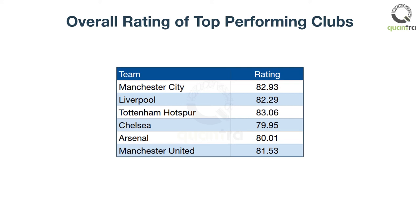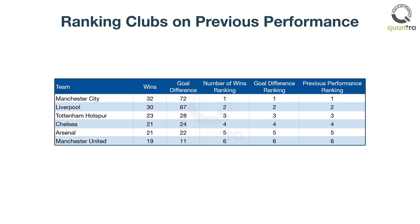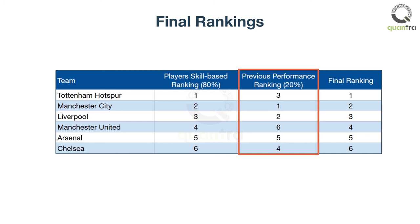In the next step, we rank the performance of the teams based on the number of wins and difference in goals. Considering 80% weightage to the players' skills and 20% weightage to the past performance of the clubs, we get the final ranking of the top 6 clubs. Based on these calculations, Tottenham Hotspur is likely to win this season.